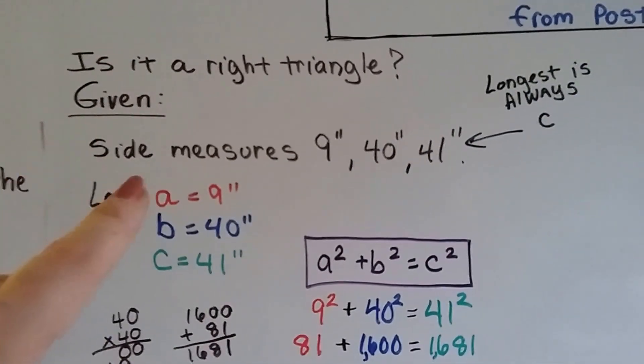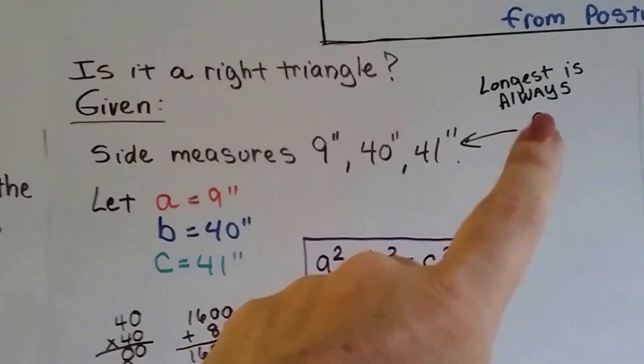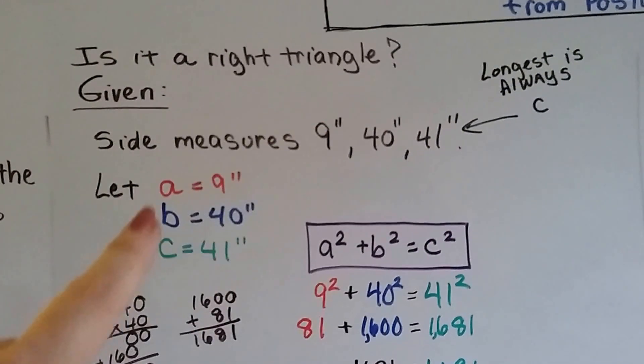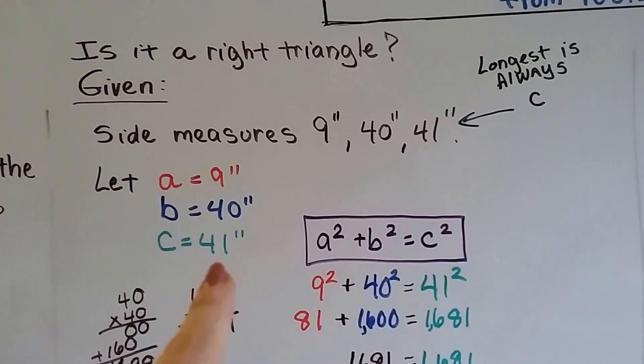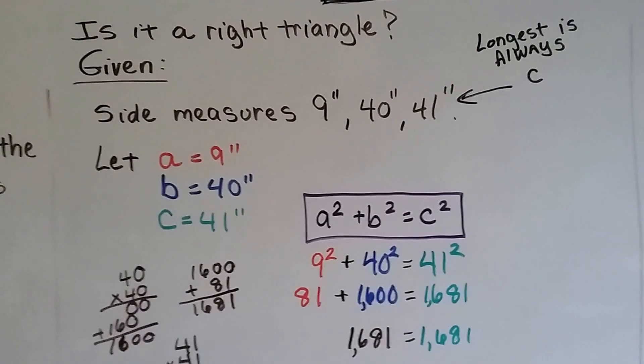If we're given side measures 9 inches, 40 inches, and 41 inches, we know the longest is always going to be c. So, we can let a equal the 9 inches, b equal the 40 inches, and c equal the 41 inches. And we'll write it with the Pythagorean theorem, a squared plus b squared equals c squared.